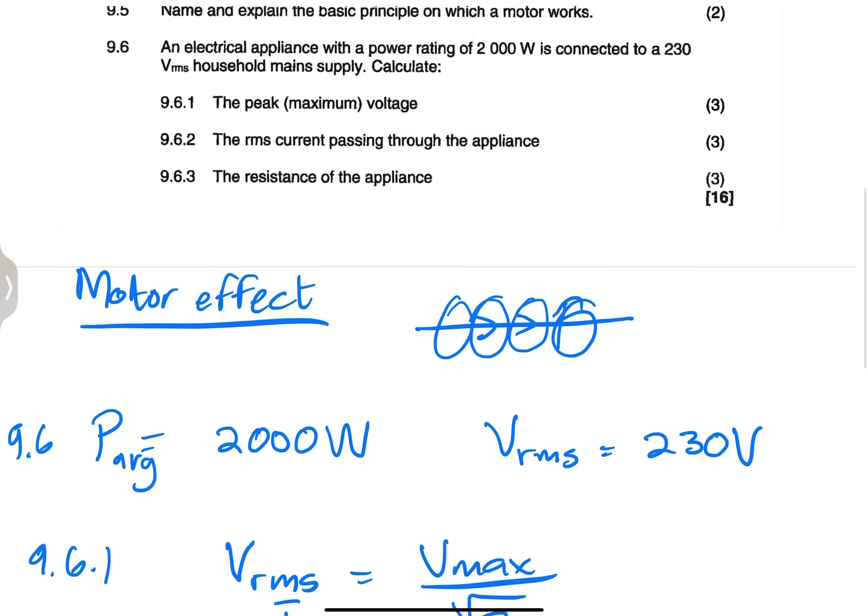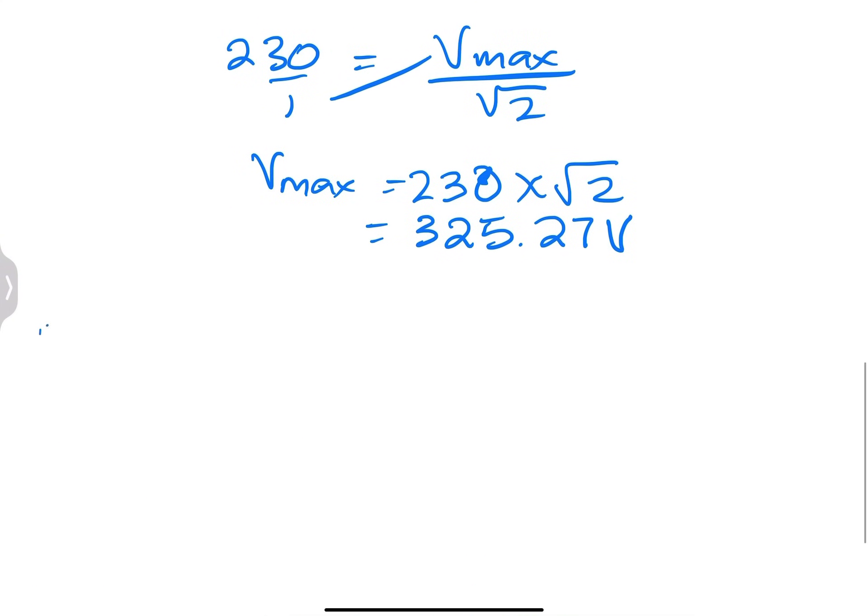So the next question, they say calculate the RMS current passing through the appliance. So remember that you're given your, so that's 9.6.2. My power, my average power is always V_RMS multiplied by I_RMS. But remember, you've got the other formulae, which is V_RMS squared over R. And then you also have I_RMS squared multiplied by R. But in this case, I'm choosing this one because I already have V_RMS. I've got the average power. So it means I can easily get my I_RMS value.